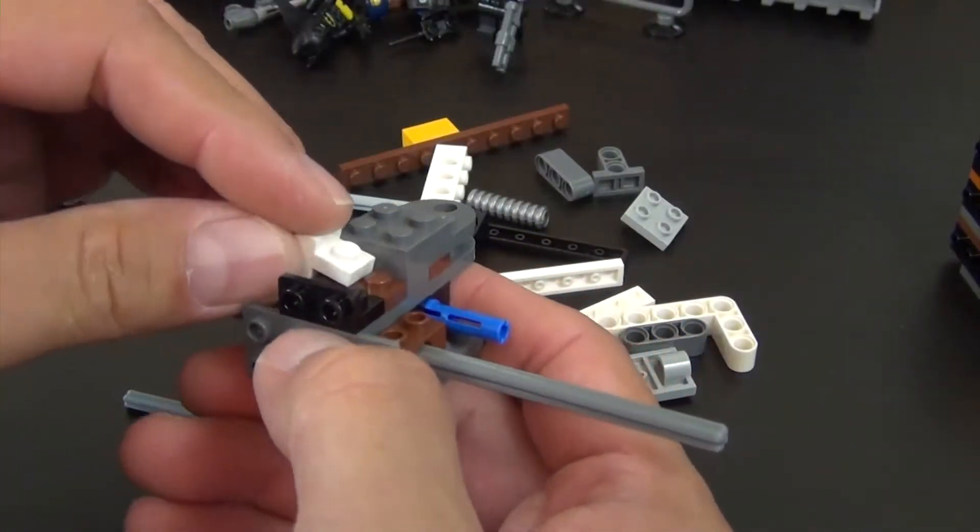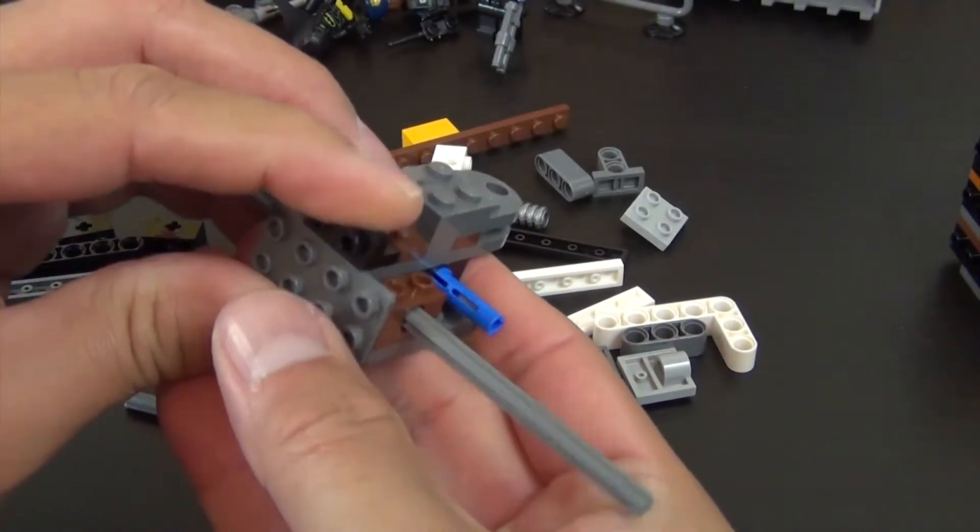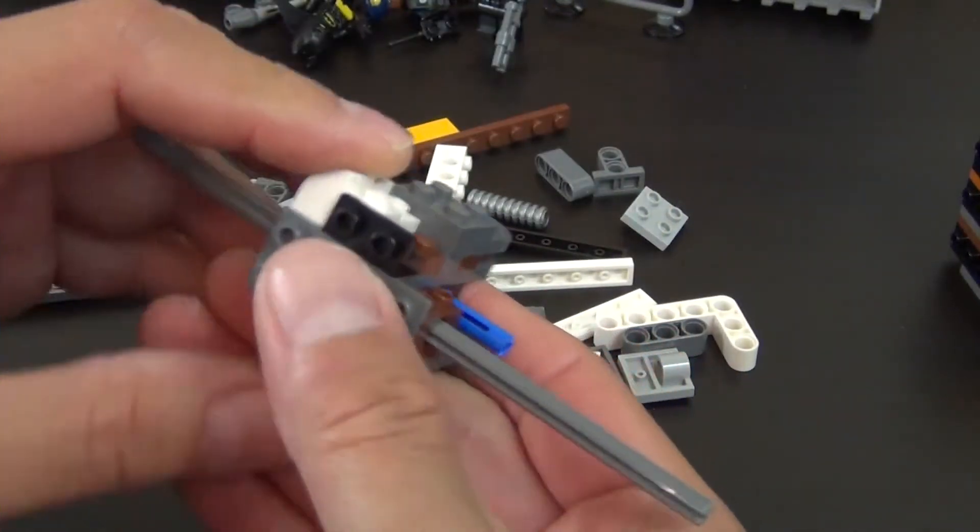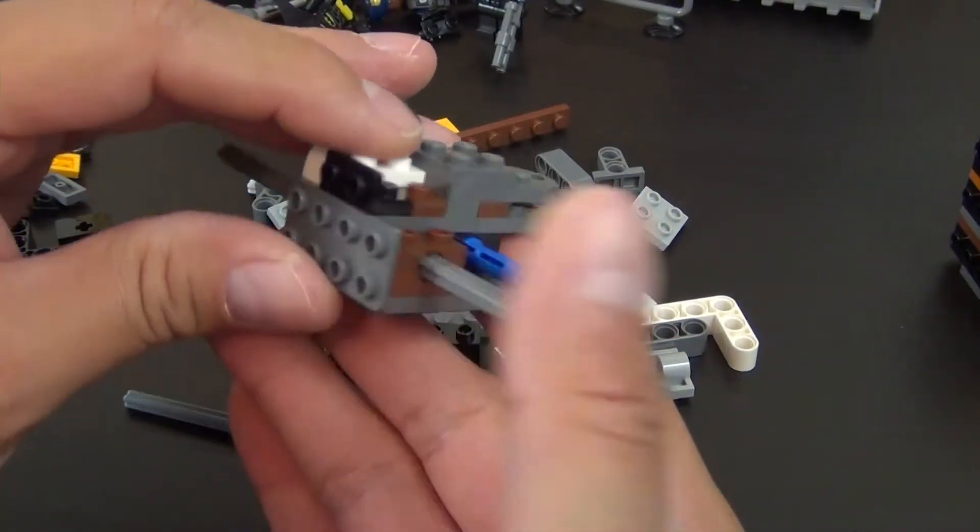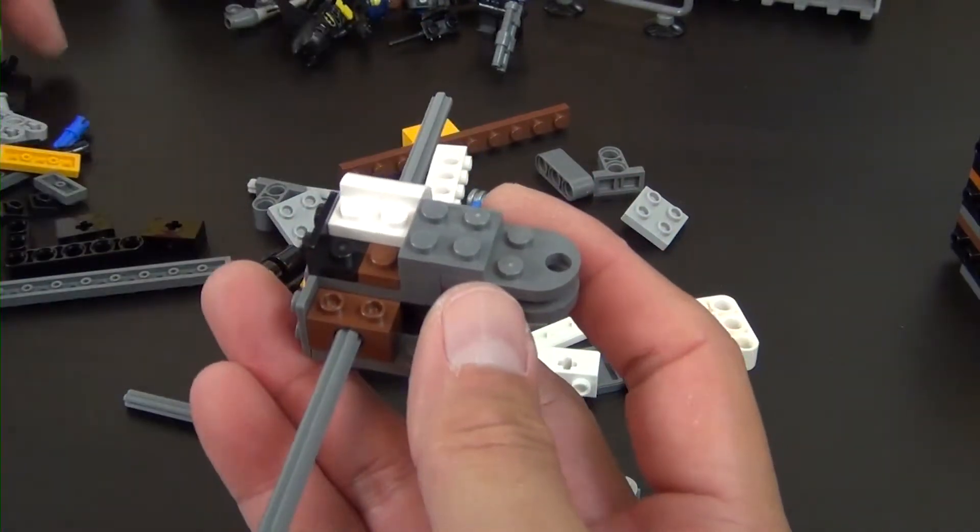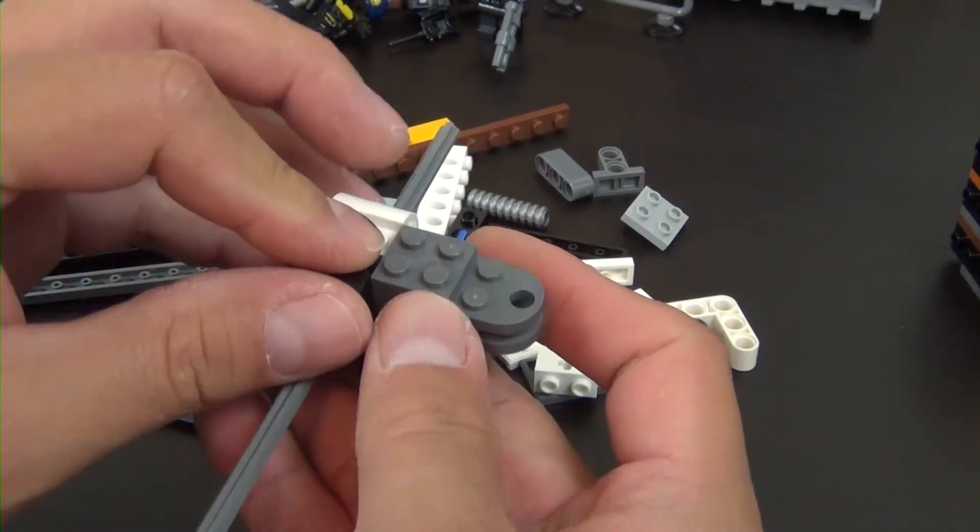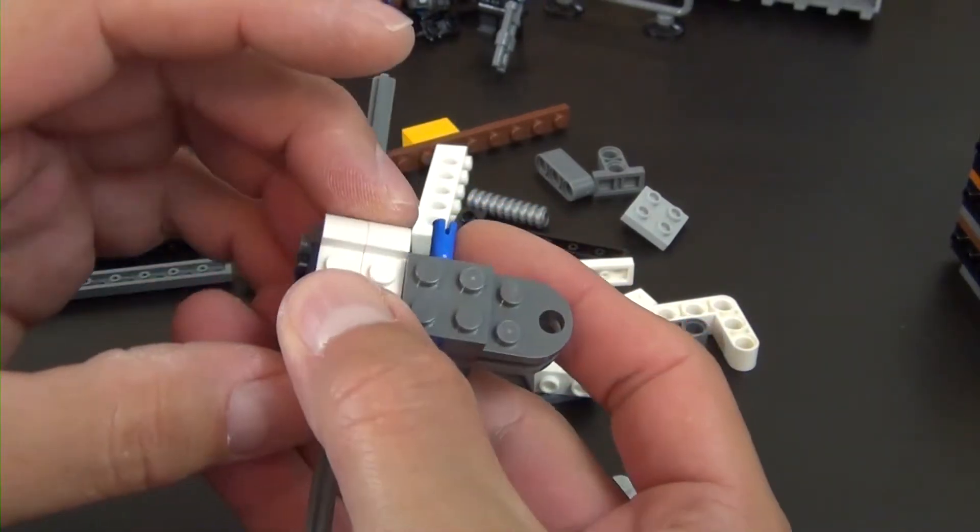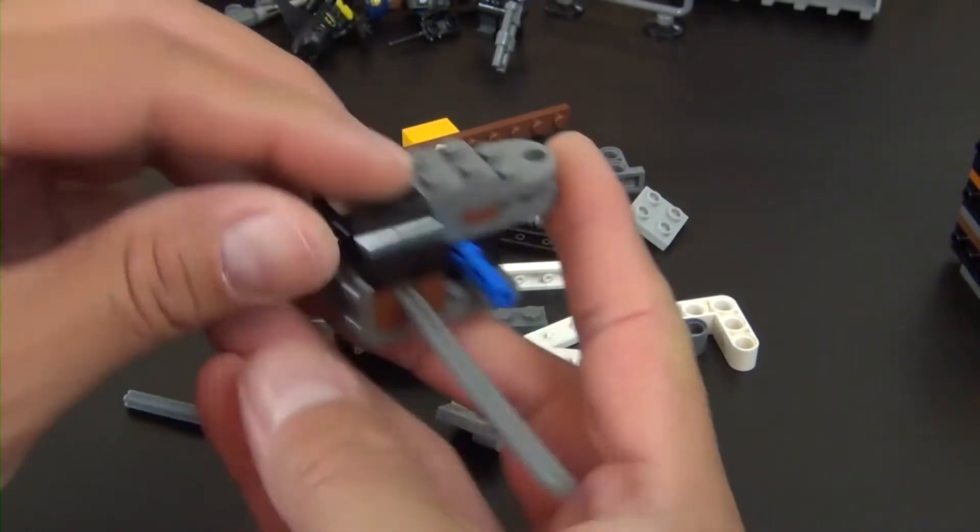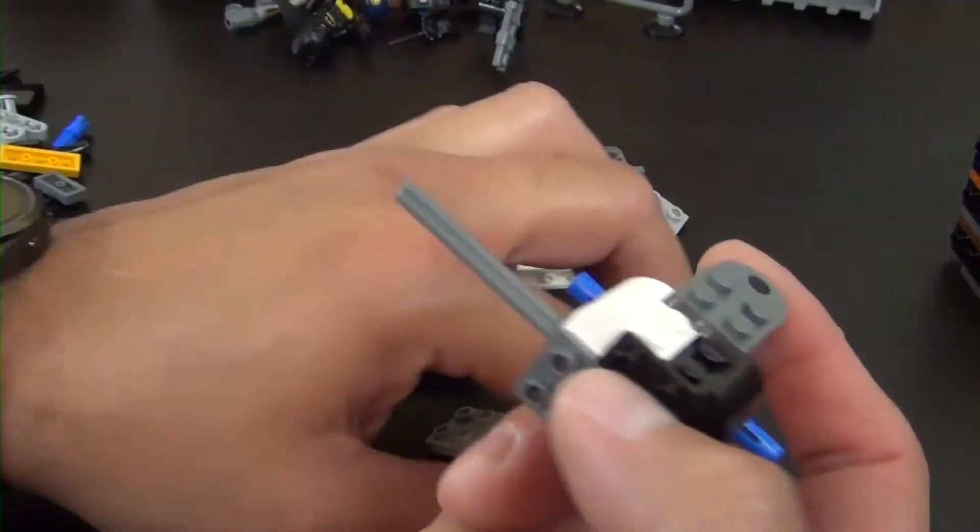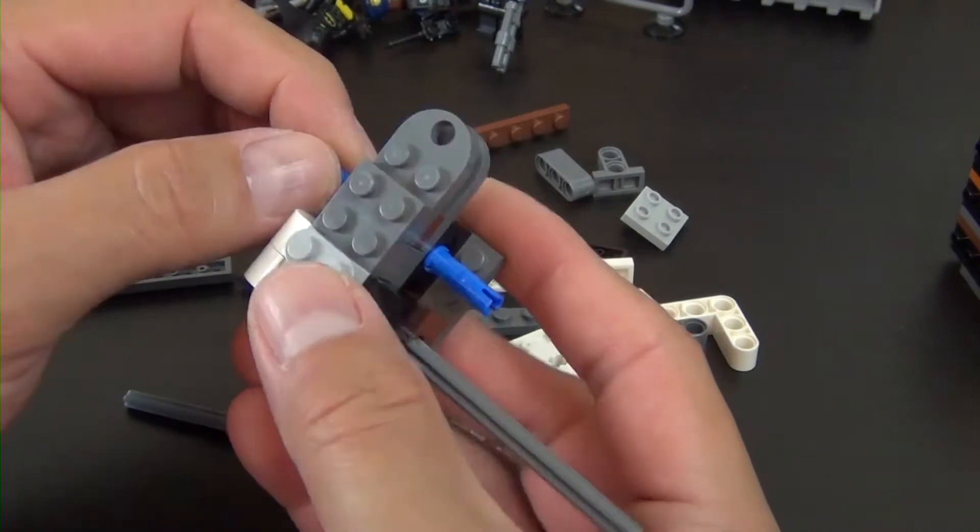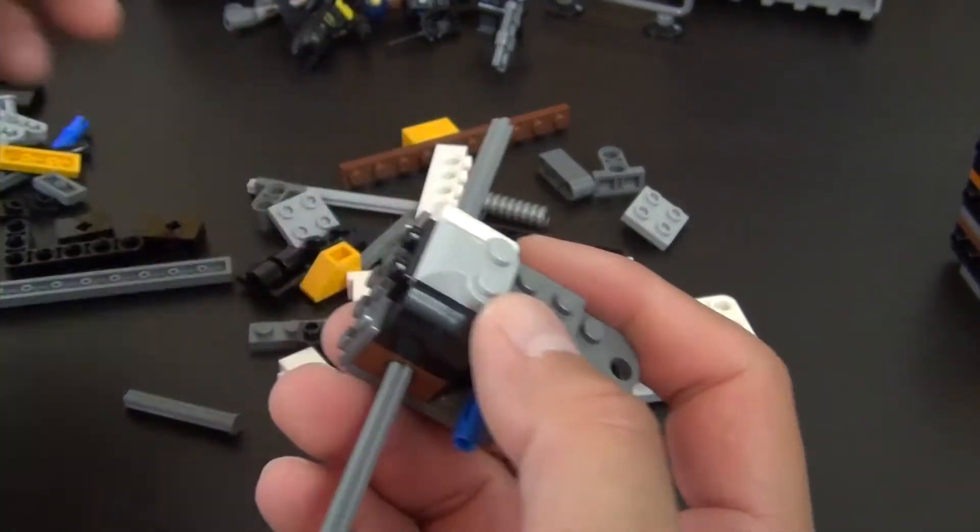All right, so these white pieces that are modified brick slash plate - we have white on one side and we're going to do the black on the other side because it is Two-Face and all of his vehicles usually are split in half with the colors.